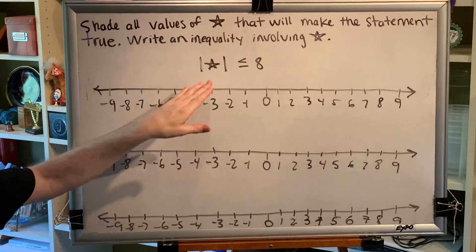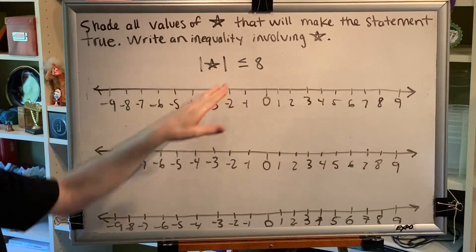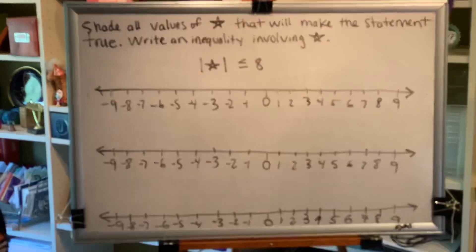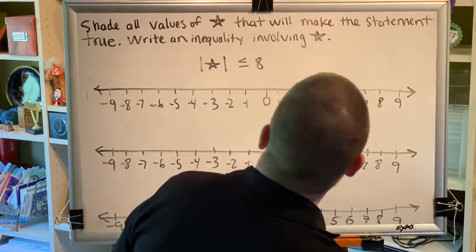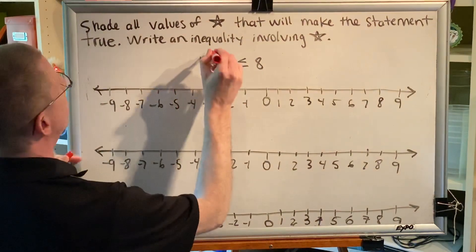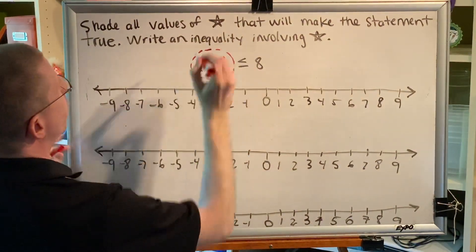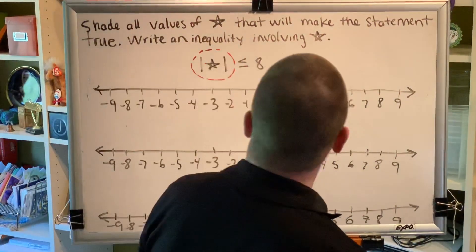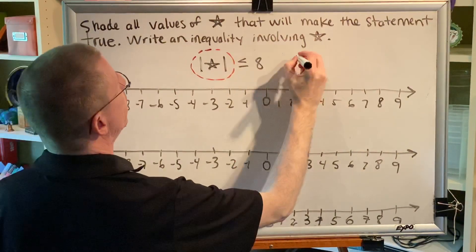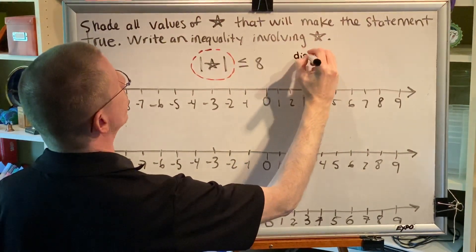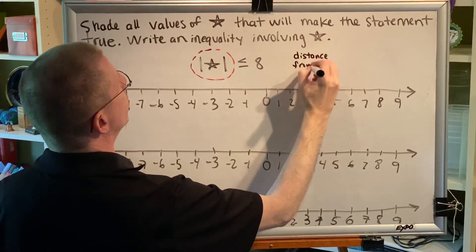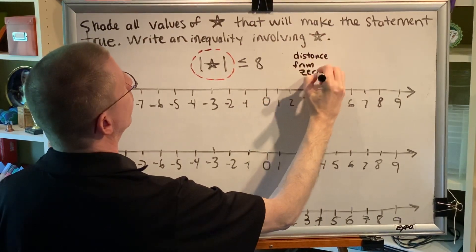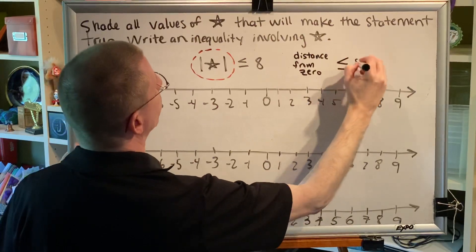Okay, so we have the following statement. The absolute value of star is less than or equal to 8. Something I'd like to remind you, whenever you see the absolute value of star, what I want you to think in your mind is distance from 0. So another way that we could rewrite this inequality statement would be to say we want all of the numbers that have a distance from 0 that is less than or equal to 8.